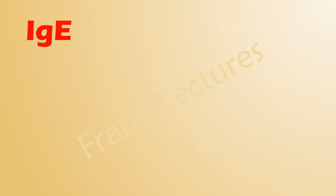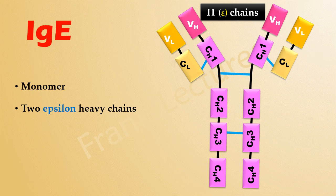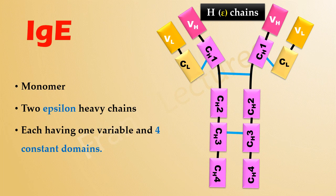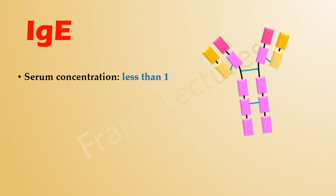Structurally, IgE is a monomer. It contains two epsilon heavy chains. Each heavy chain has four constant domains, like IgM. IgE is found in trace amounts in serum — it is the least abundant immunoglobulin in serum.